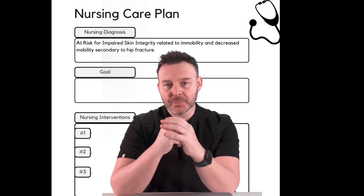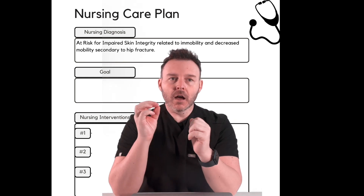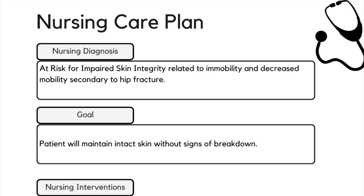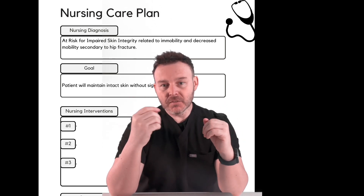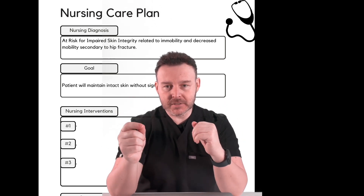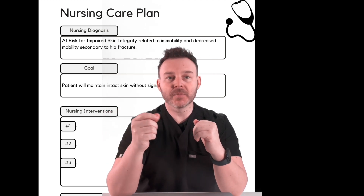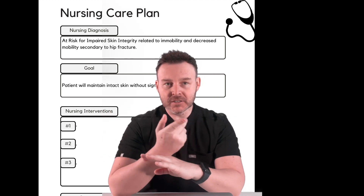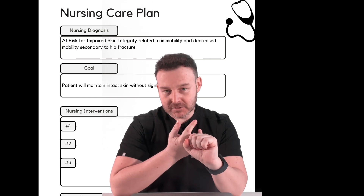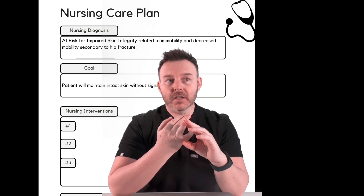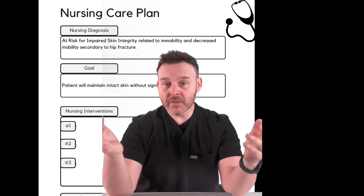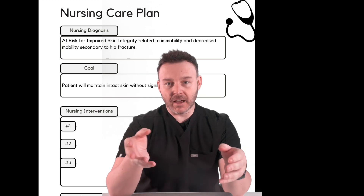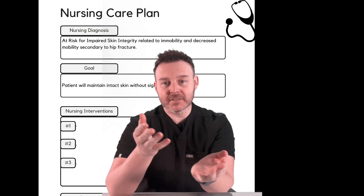What kind of goal can we set here? Using the SMART criteria: patient will maintain intact skin without signs of breakdown for the duration of the hospital stay. Let's check — is it specific? Yes. Measurable? We can measure intact skin, yes. Attainable? Yes, with the interventions we'll implement. Realistic? Yes, there are no breakdowns right now. Timely? By the end of the hospital stay — it meets all the criteria.